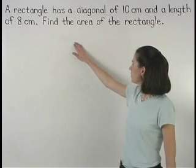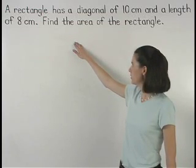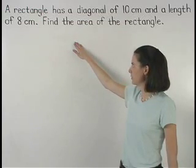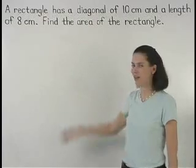A rectangle has a diagonal of 10 centimeters and a length of 8 centimeters. Find the area of the rectangle.